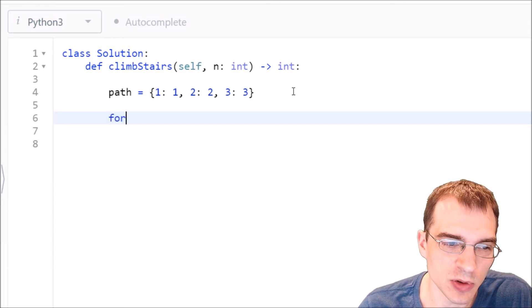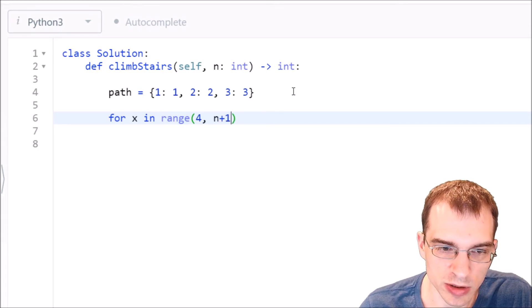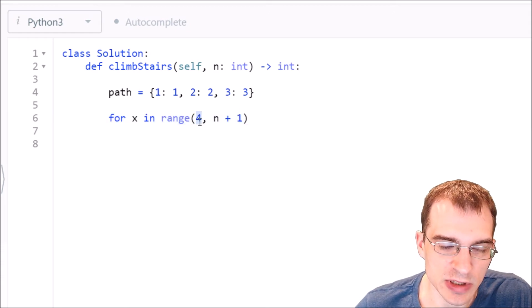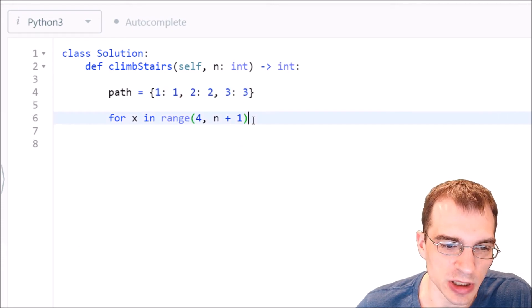And then we need to make a for loop up to what our target value of stairs n is. So say for x in range four to n plus one, because we need to get all the way up to n. So basically we're starting at four because if it's less than four, then we know it's something we already know the answer to. This for loop will just be skipped and it will return the answer anyway.